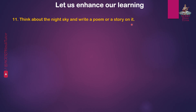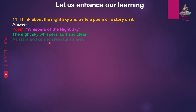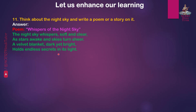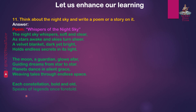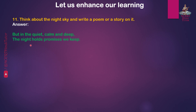Question 11: Think about the night sky and write a poem or a story on it. We will first read the poem and then a story so you can write them accordingly. Poem — Whispers of the Night Sky: The night sky whispers soft and clear, as stars awake and sky turns sheer. A velvet blanket, dark yet dry, holds endless secrets in its light. The moon, a guardian, glows afar, guiding dreams from star to star. Planets dance in silent grace, weaving tales through endless space. Each constellation, bold and old, speaks of legends once foretold — of kings and queens and battles won, stories written by the sun. But in the quiet, calm and deep, the night holds promises we keep. For every dream beneath its sky, find wings to soar, learns how to fly.